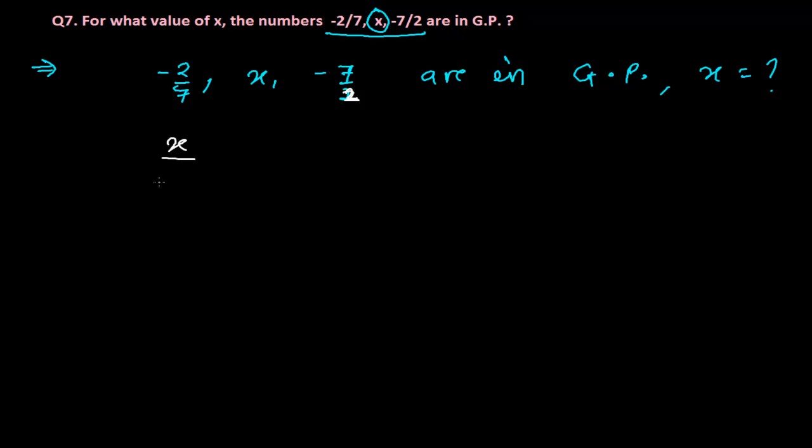That is x divided by minus 2 by 7, so it will be again equals to the succeeding term, that is minus 7 by 2 divided by x. Every time we know that the ratio of the succeeding term over the preceding term is constant. So let's solve this, we will get the value of x.